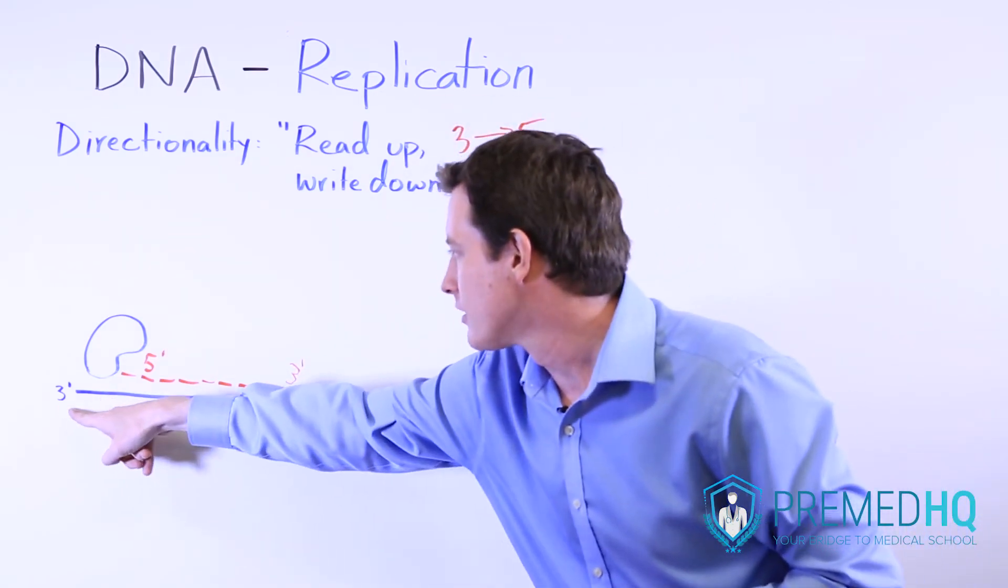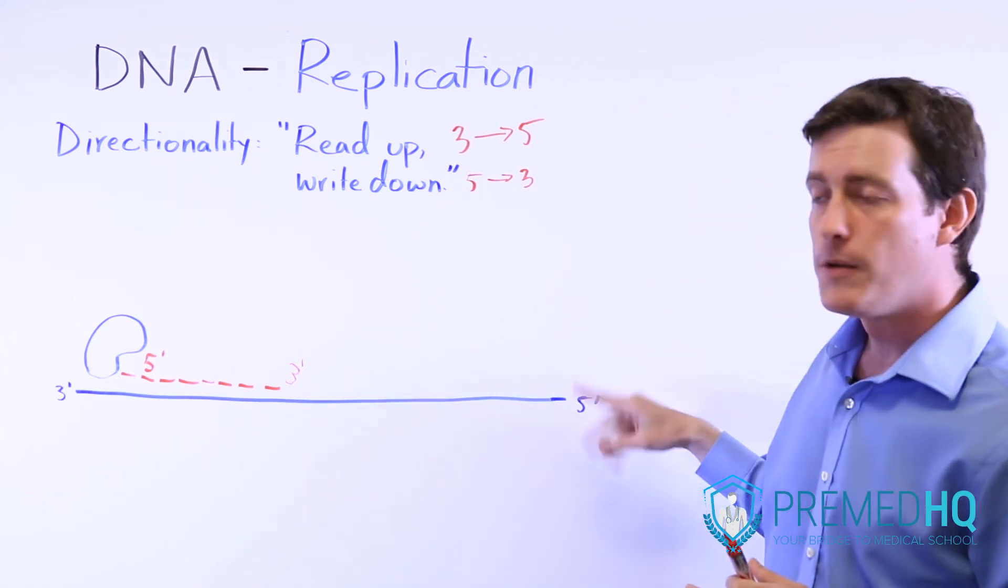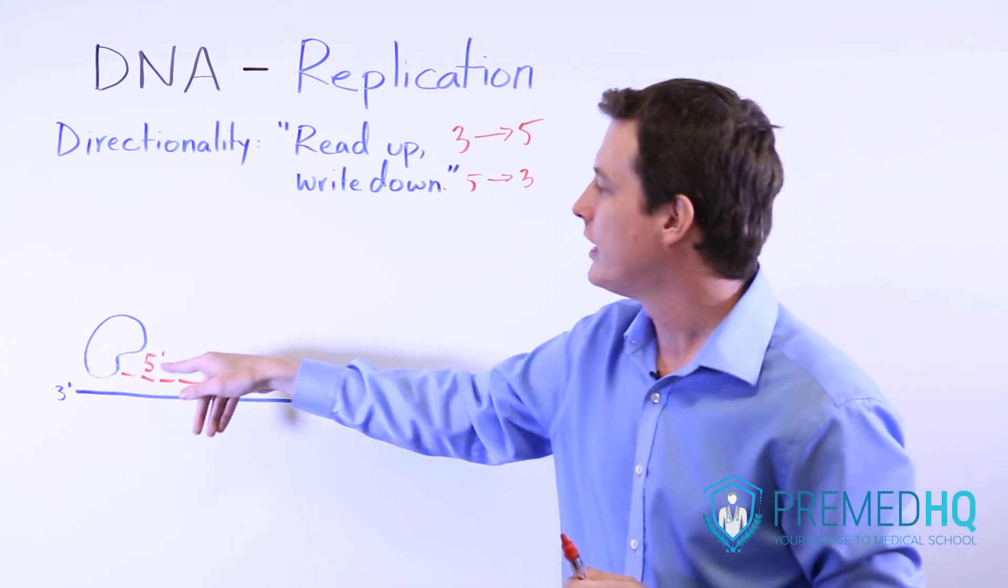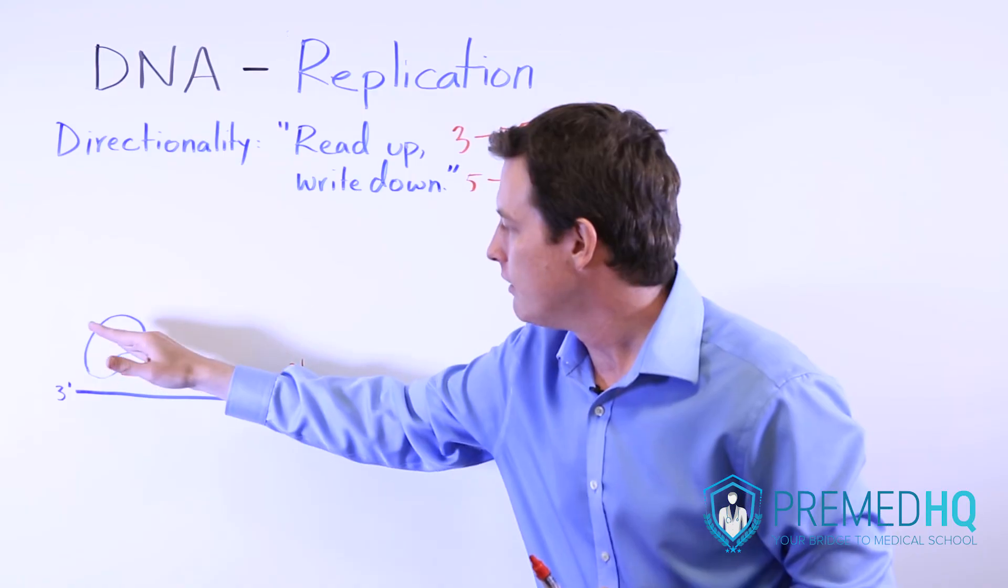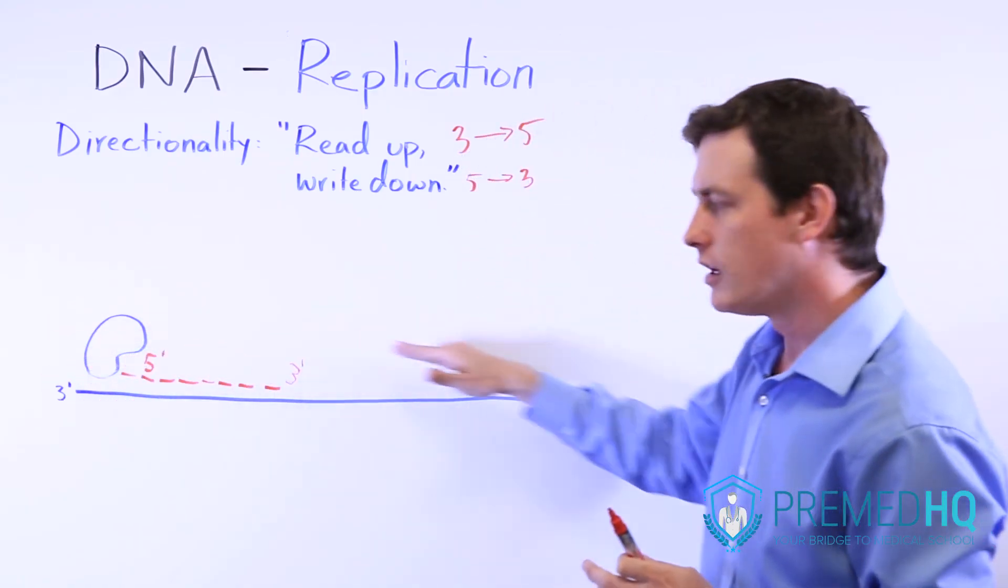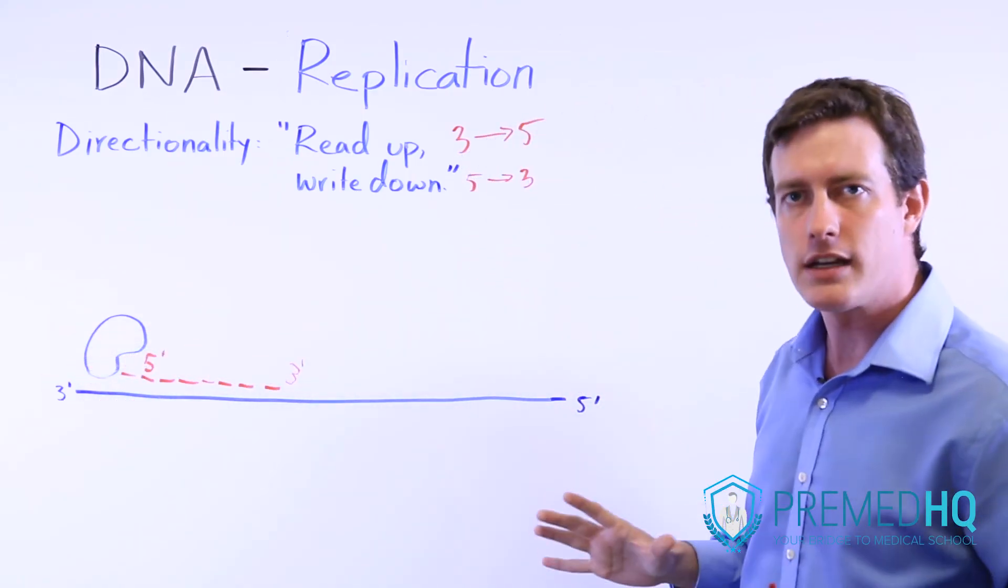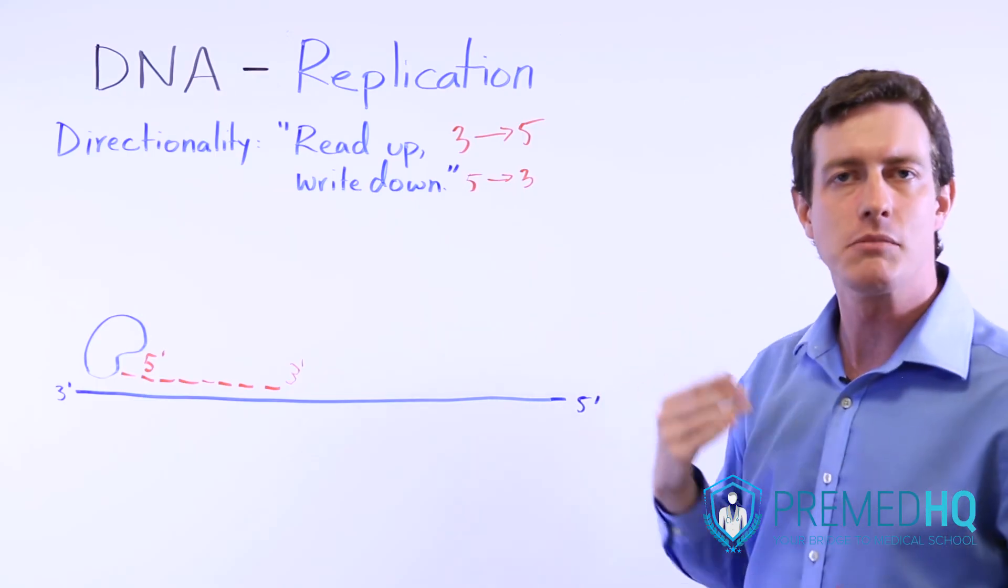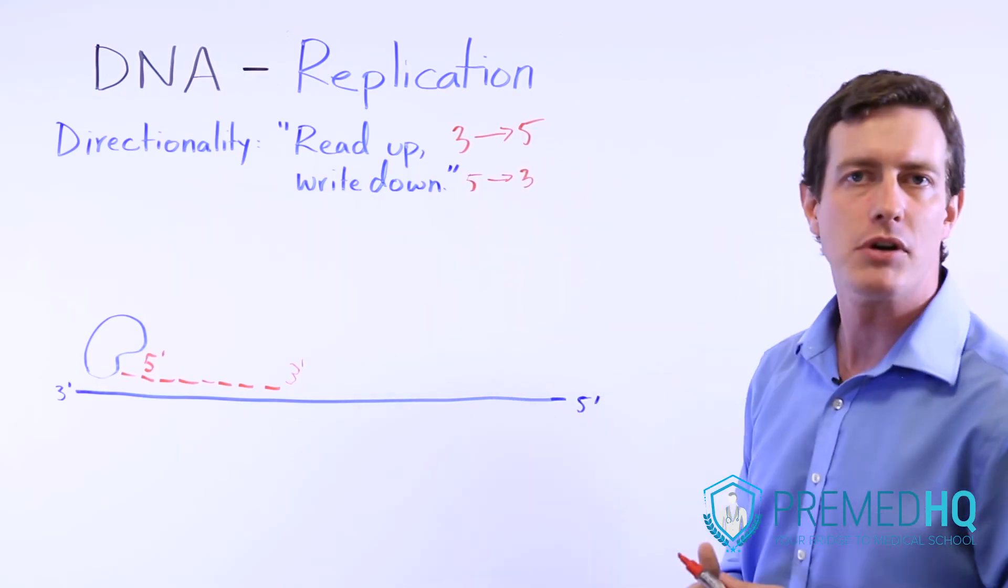You read starting at the three and you move toward the five. But as you write it, the new strand is being produced from the five prime end over to the three prime end. And now we'll get into the specifics of the enzymes involved in the replication process.